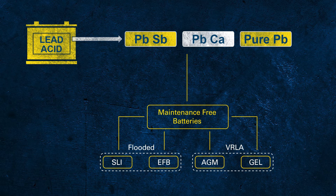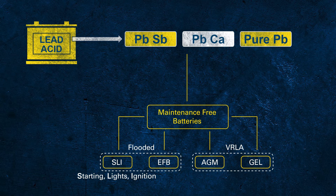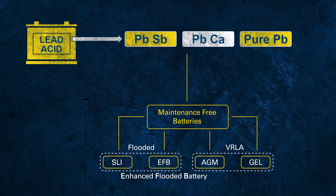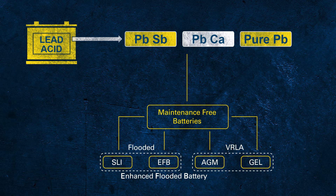Let's shed some light on the abbreviations used here. SLI stands for starting, lights, and ignition, which describes the main duties of a conventional starter battery. EFB stands for enhanced flooded battery. This is not a protected term, so any change applied to an SLI might be called an EFB. Usually EFB indicates a flooded battery with improved cycling capabilities, though it is not as robust as VRLA technology.